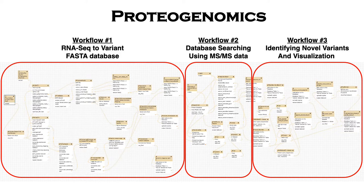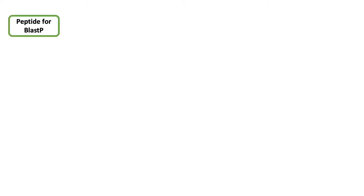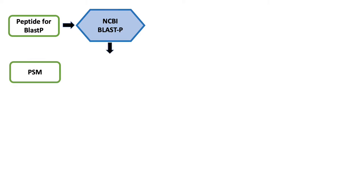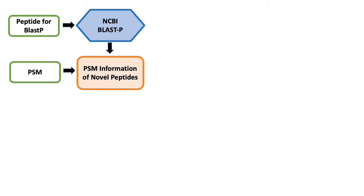As we have developed a workflow for the novel peptide analysis, there are some important steps involved. In the database search tutorial, we had a list of peptides converted to a FASTA database. This FASTA file is then searched against the NCBI NR database to find any matching peptides. Once this step is completed, a tabular output with its alignment to the references is displayed. We combine this information from BLAST-P with the PSM report from Peptide Shaker to obtain all the information about these detected peptides.